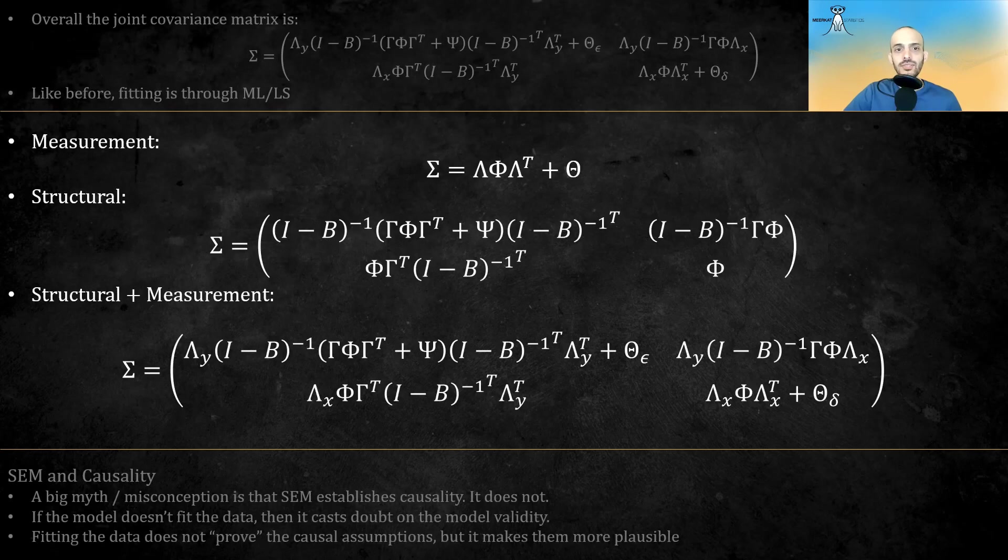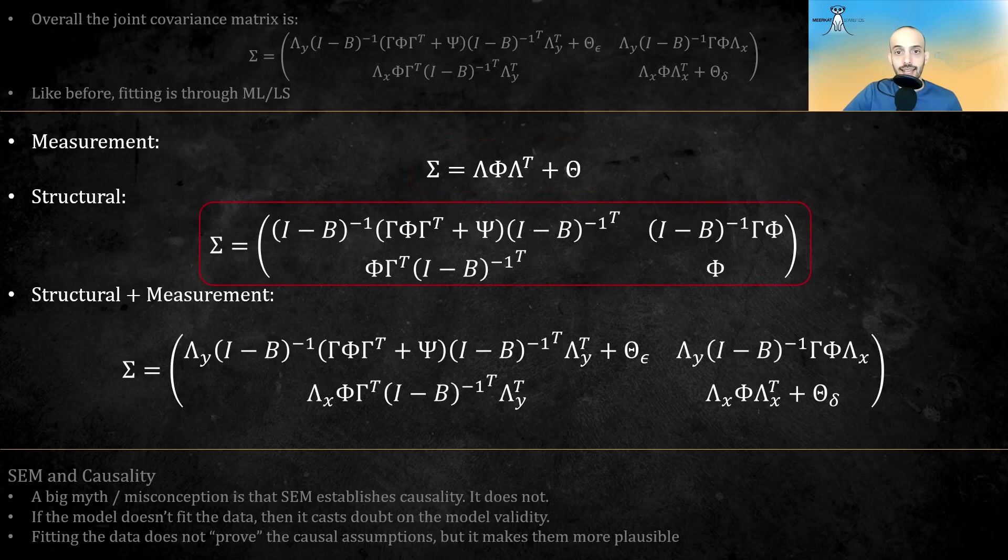In this slide, I want to show the development of the implied covariance matrix. We can see that the complexity rises from a simple measurement model, aka CFA, to a structural model, aka path analysis, or simultaneous equations, to a full SEM model which combines both of the previous models.